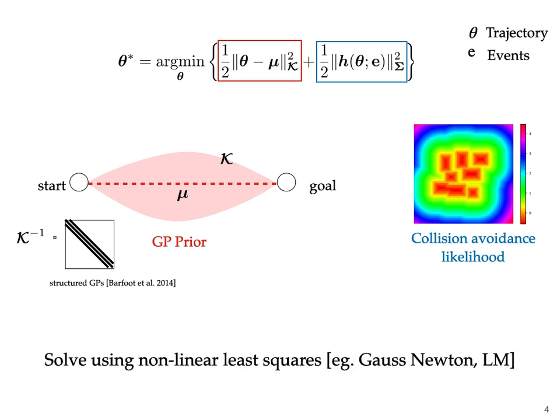The optimization problem is then solved using iterative methods such as Gauss-Newton or LM, which proceed by linearizing the objective around the current estimate of the trajectory and computing an update till a convergence criterion is met.